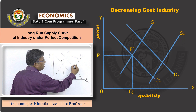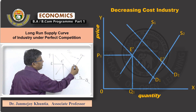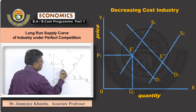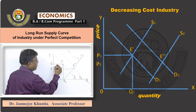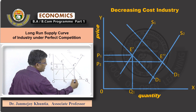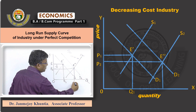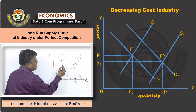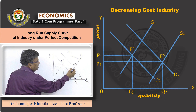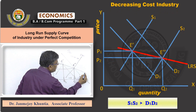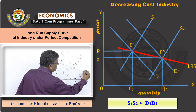The new equilibrium with the new demand and supply is at E double dash. At the new equilibrium, price has fallen to P2 and quantity has increased to Q2. Joining E dash and E double dash, you get a downward sloping long-run supply curve.